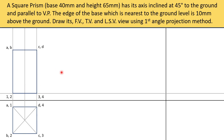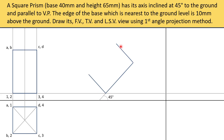Now we need to rotate the square prism 45 degrees. We will draw a line and mark it as 45 degrees. According to this, from the 10 mm line we drew earlier, we will draw a 65 mm line — 65 mm is the height of this square prism. Now we need to extend the lines and complete the rectangle. This will be the side view when the whole square prism is rotated by 45 degrees.